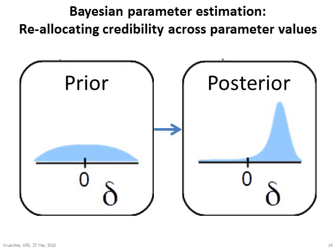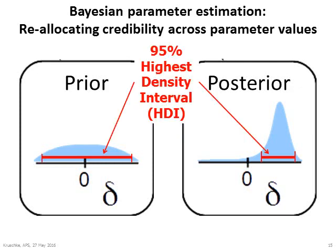Bayesian parameter estimation is simply reallocating credibility across parameter values. We begin with a prior distribution — such as the diffuse distribution shown on the left — which says that a wide range of values for parameter delta are weakly credible. Then we take into account some data and reallocate the distribution toward parameter values consistent with the data, as shown by the narrower posterior distribution on the right. Probability distributions can be summarized by the 95% highest density interval, or HDI. Any value inside the interval has higher probability density than any value outside, and the total mass is 95%. The 95% HDI is narrower in the posterior than in the prior, indicating the estimate has become more precise after including more data.